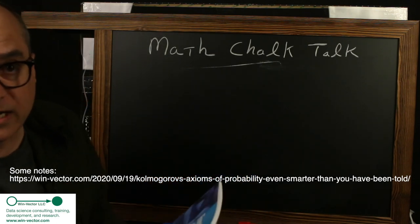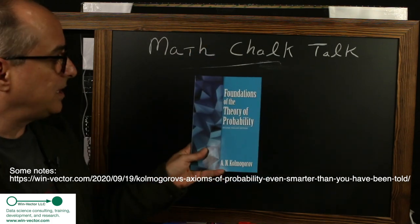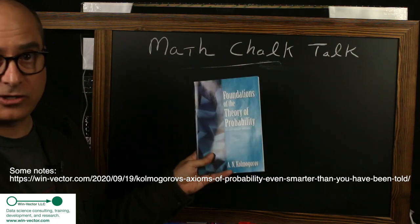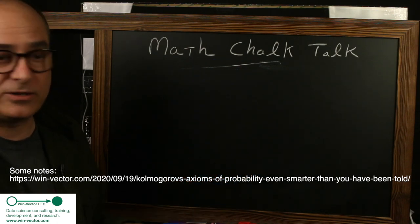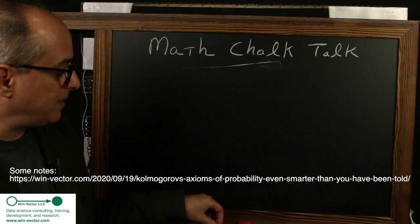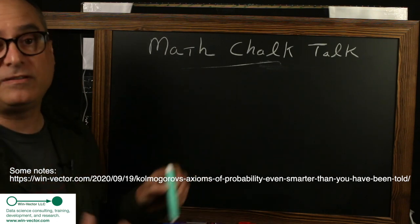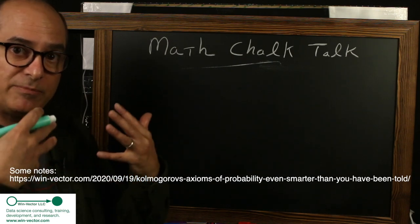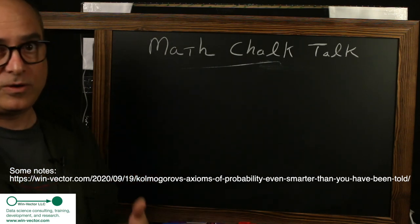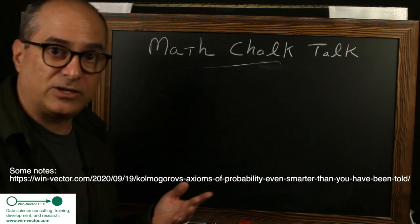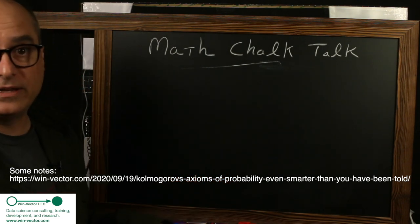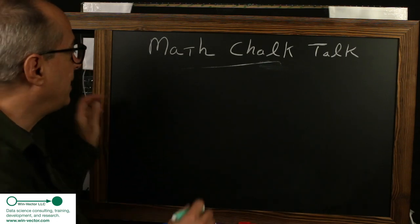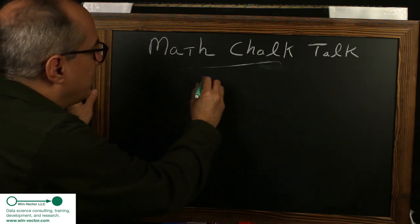The main introduction of the methodology was an accounting system telling you which sets to even attempt to measure. That accounting system is called a sigma algebra, and that sort of replaced the naive notion that every set has a measure or probability. Whereas this now says that's actually quite dangerous. At best, there's a subset of sets you should have an opinion on.